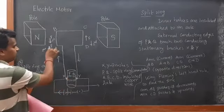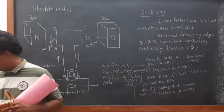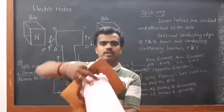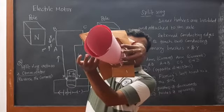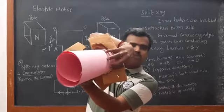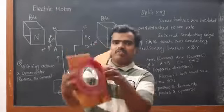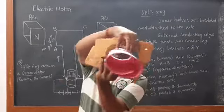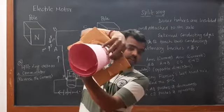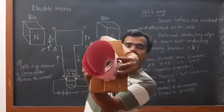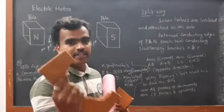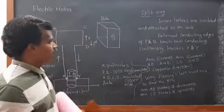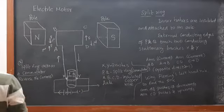If the direction of current changes, obviously the force will also change. So continuously, this split ring keeps reversing the current every half rotation, allowing both the axle and the split ring to continuously move in a single direction — not back and forth, but in a single direction. That is why motors provide complete continuous rotation.